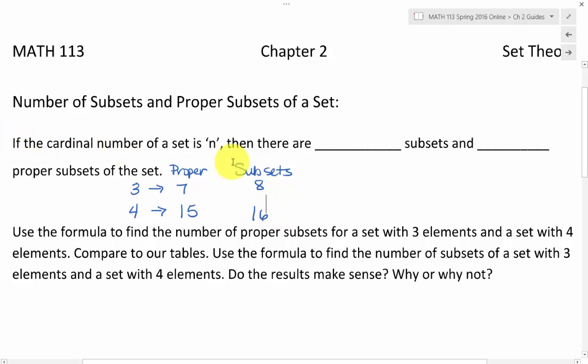So if the cardinal number of a set happens to be n, and here we have three and four, those are our two examples, then there are two to the n subsets and two to the n minus one proper subsets for any set.